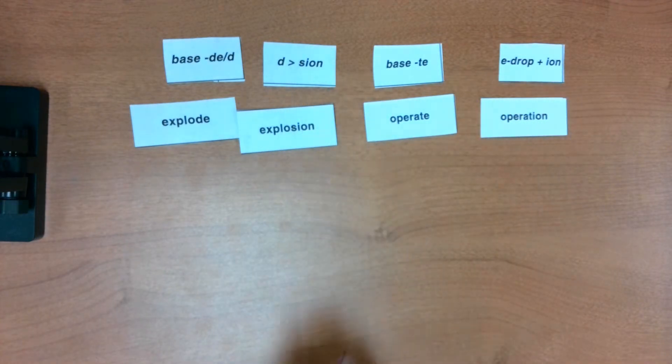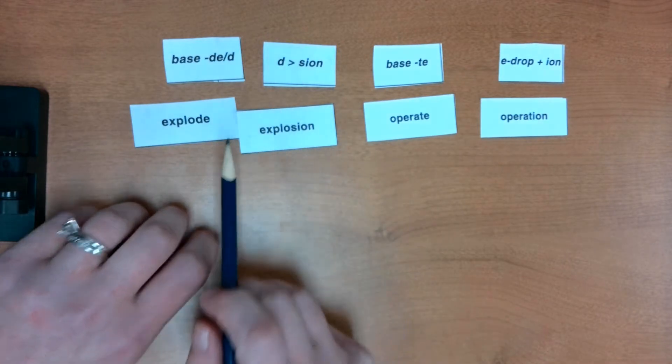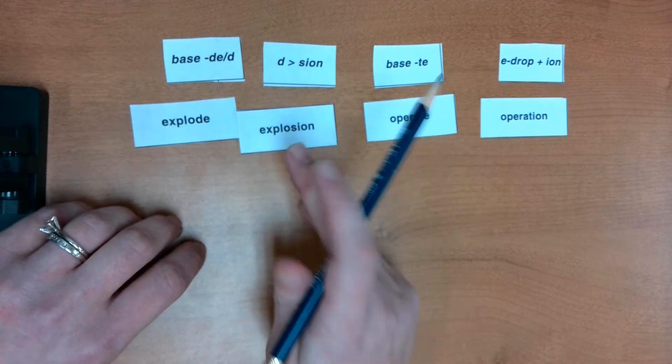Remember that I-O-N is a state of being, it's a noun suffix. And so far we've been looking at adding that I-O-N with no spelling changes. But today we're going to be taking a look at two different kinds of spelling changes.